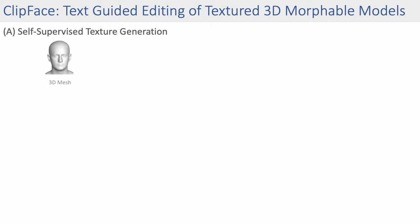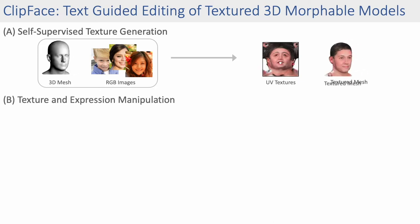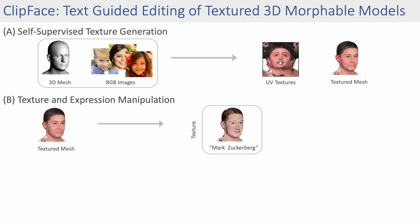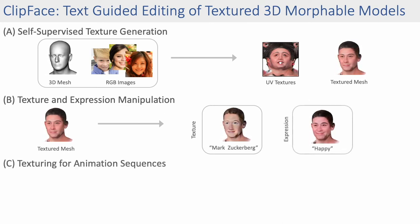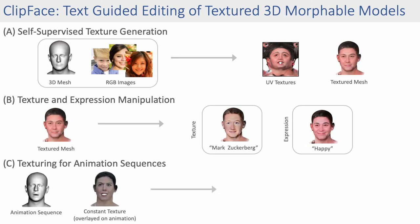Given a 3D morphable face model and RGB images of human faces, we generate texture maps that can then be applied to the face geometry. We then use this textured mesh as our starting point to generate a variety of textures and expressions. Finally, we also propose a method to generate temporally changing textures based on expression for a given animation sequence.